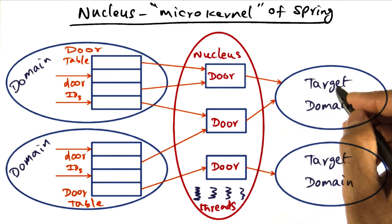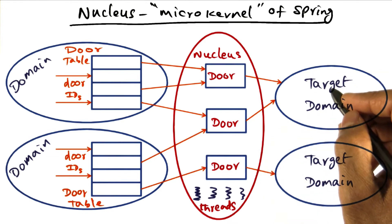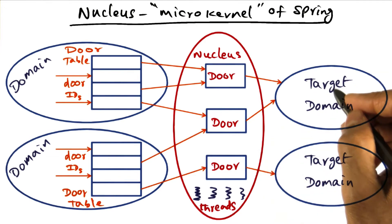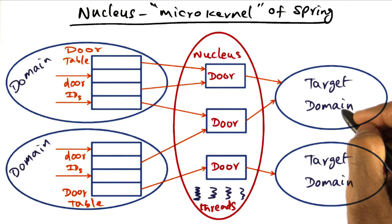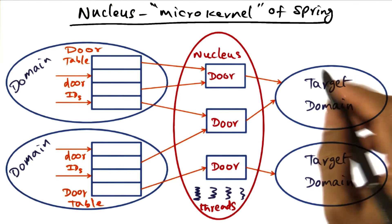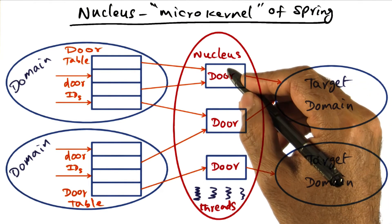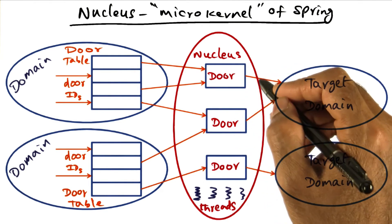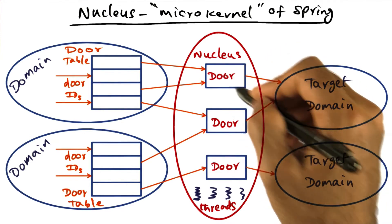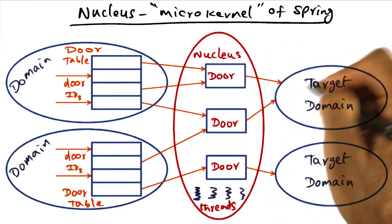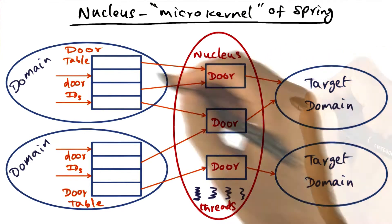For example, if I'm a file server, I have entry points such as opening a file, reading a file, writing a file, and so on. Basically, I will create those entry points as doors into my domain.